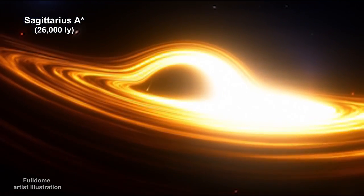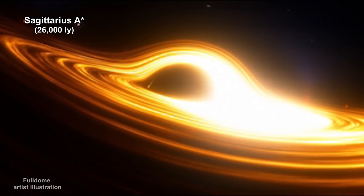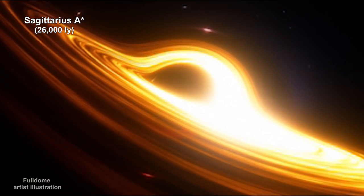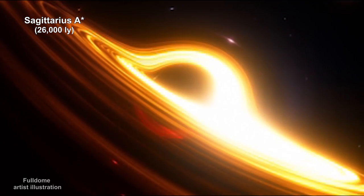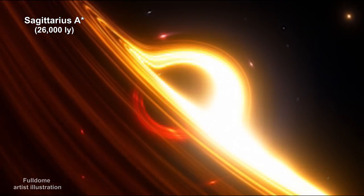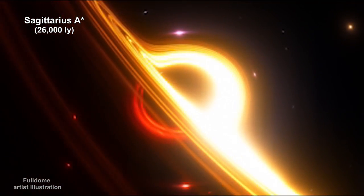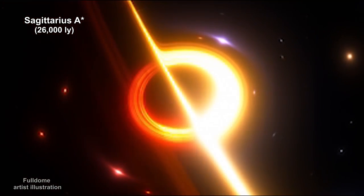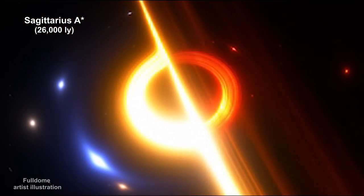There are three classifications for black holes based on their mass. Stellar, with masses up to 10 times the mass of our sun. Supermassive, with millions or even billions of times the mass of our sun. And Intermediate, with masses somewhere in between. SAG A star is a supermassive black hole.